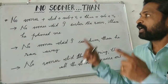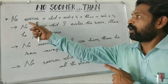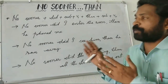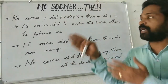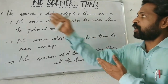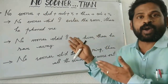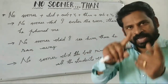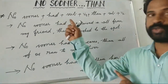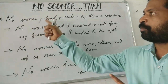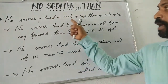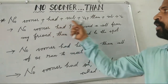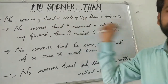There is another facility for us. Instead of this structure, you also have another structure which expresses the same thing. Let us see that structure. Structure is: no sooner, plus had, plus subject, plus V3. Note the change of structure — had plus V3.